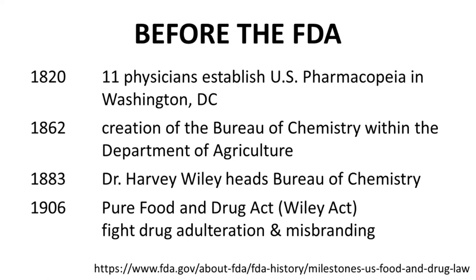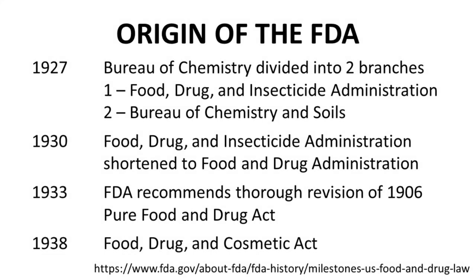While we're getting close, the Food and Drug Administration had not been formed by this date of 1906. In 1927, the Bureau of Chemistry split. One branch was the Food, Drug, and Insecticide Administration. The other was the Bureau of Chemistry and Soils. So you can perhaps see some of the strain of housing both of these organizations under the umbrella of the Department of Agriculture.